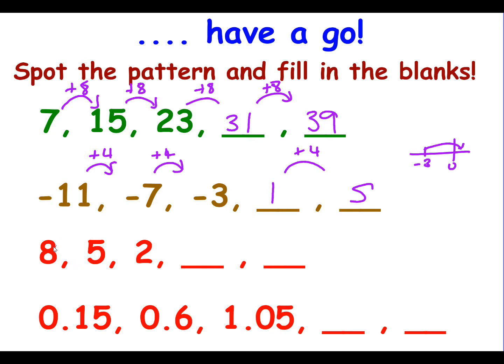On this sequence, we have 8 and we're subtracting 3 every time. So we're at positive 2 and we're going to take away 3, so we're going to end up at minus 1. And then we subtract 3 again, we end up at minus 4.